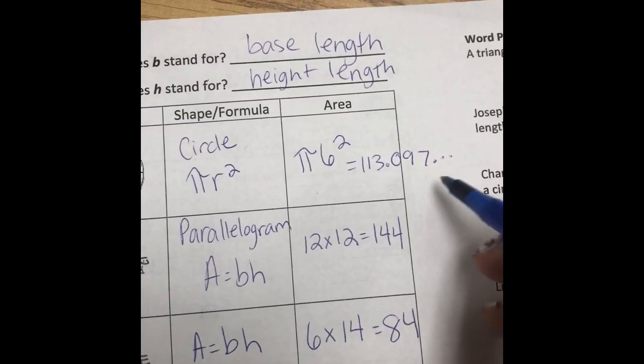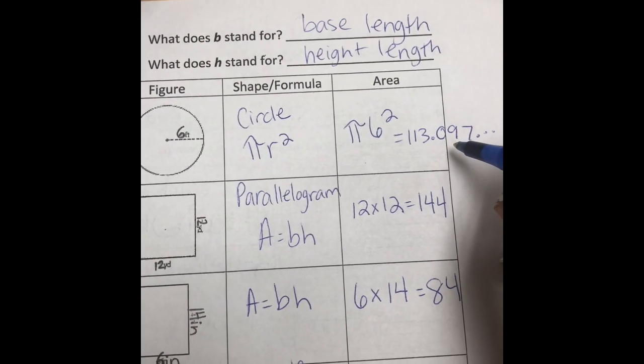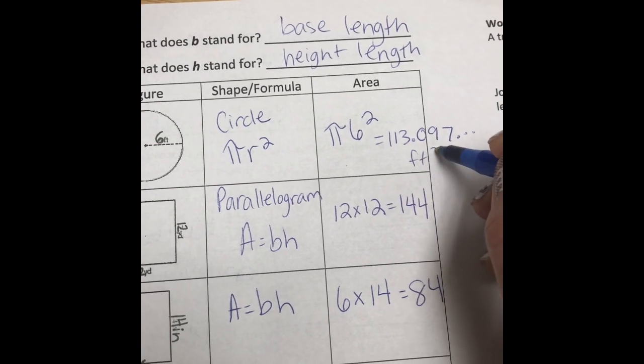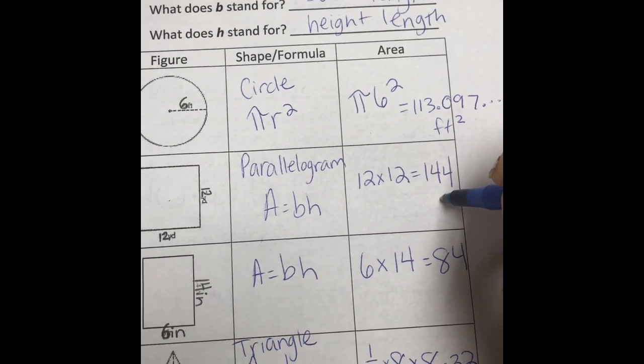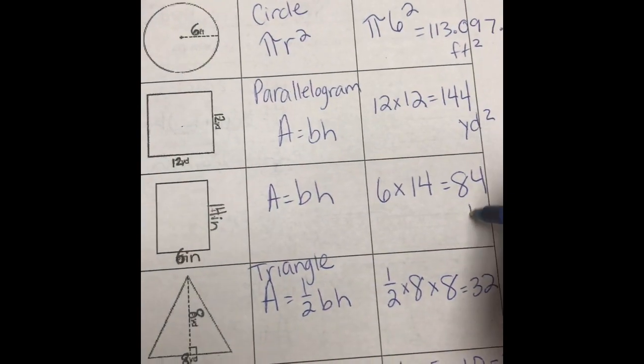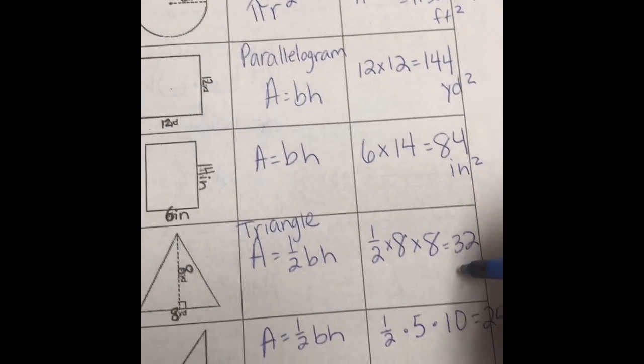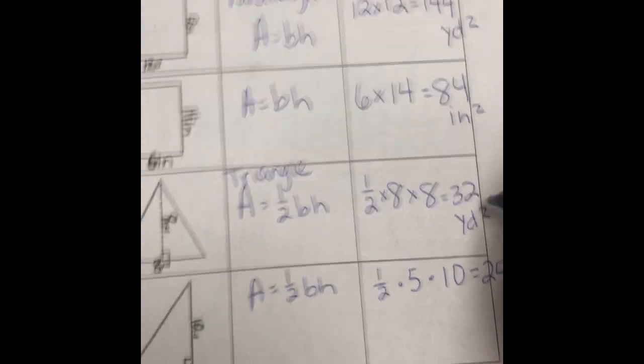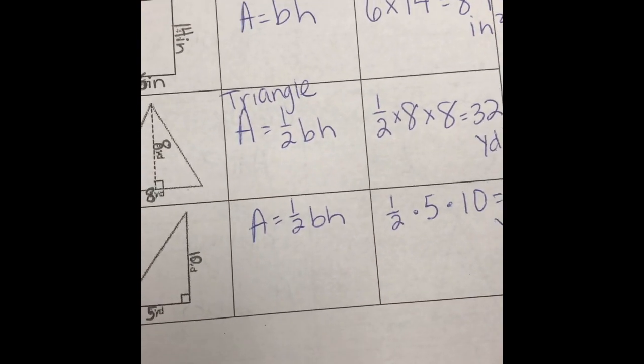And then do not leave your numbers naked. So this is feet squared because it's area. So those are square measurements. Yards squared, inches squared, yards squared, and yards squared.